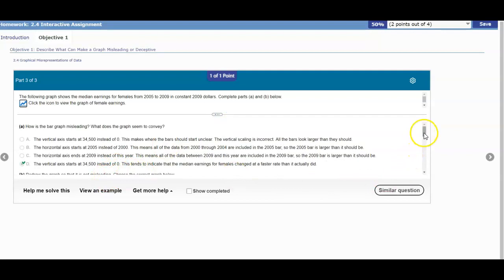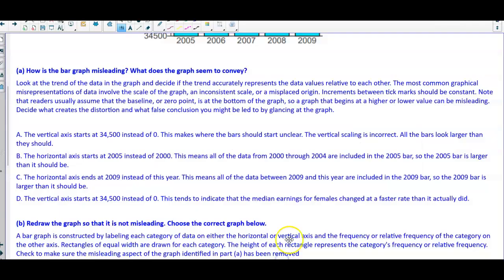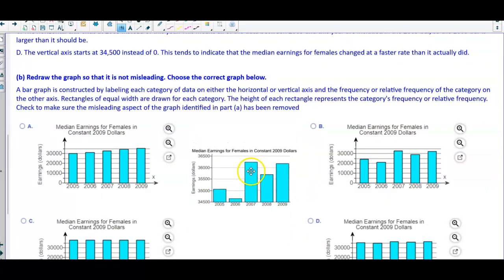Now let's take a look at the next question. It says redraw the graph so that it is not misleading, and then we're going to choose the correct graph. So let's take a look here. Here is the graph, our main graph from above.